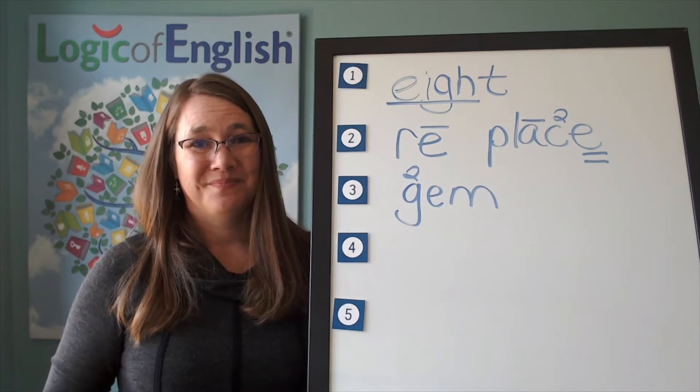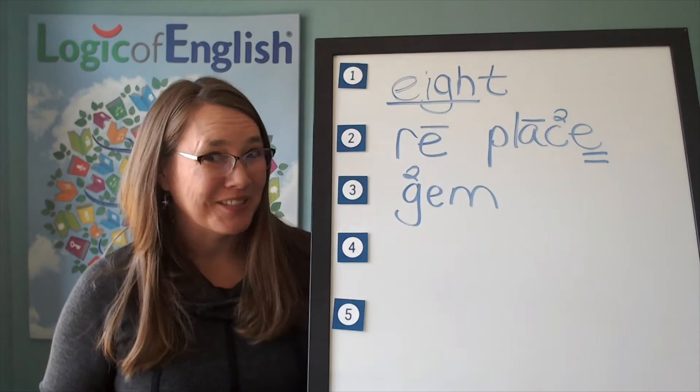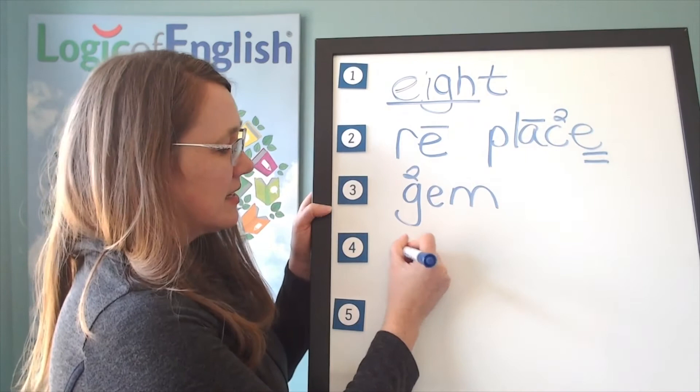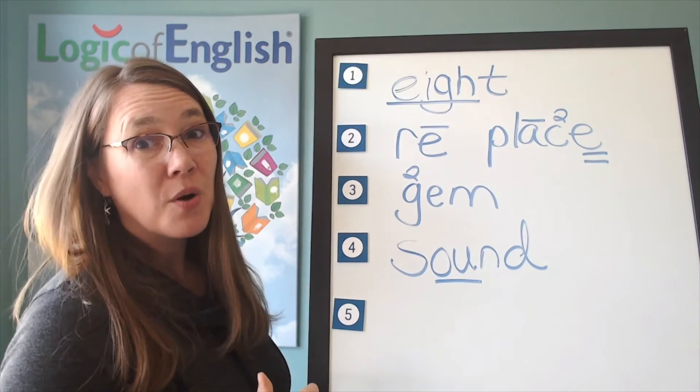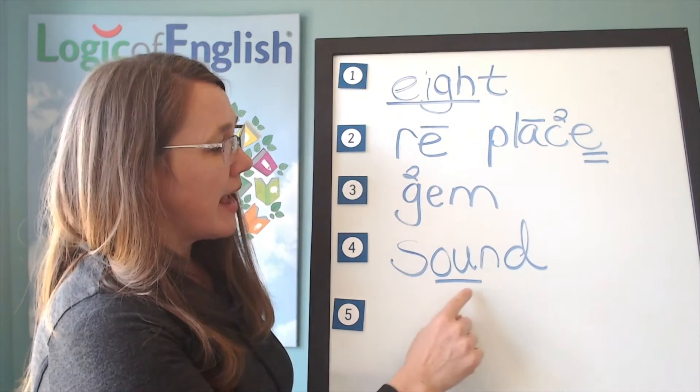I love how you're sounding out the word sound. All right. Help me to sound it out. Sound. S-OW-N-D. Very good. And how will we mark it? We'll underline the OW. And what sound of OW is this? It's the first sound. OW. S-OW-N-D. Sound.